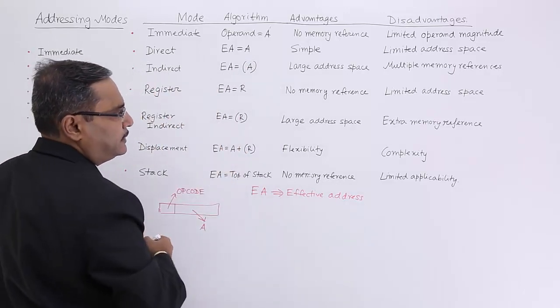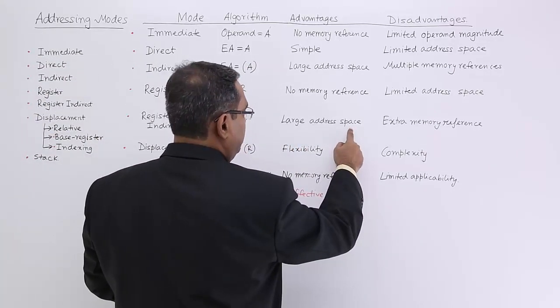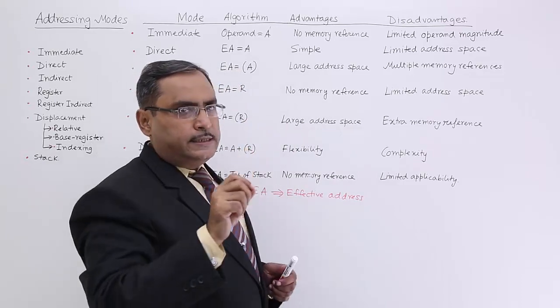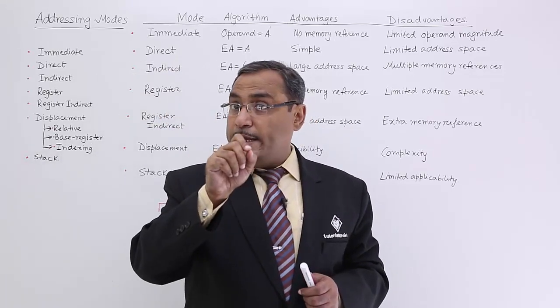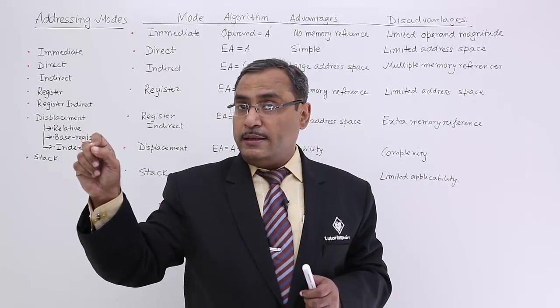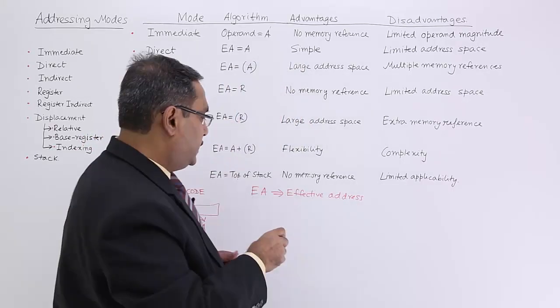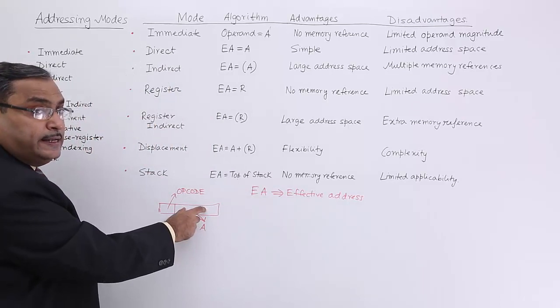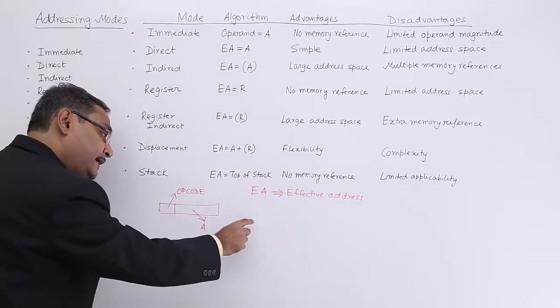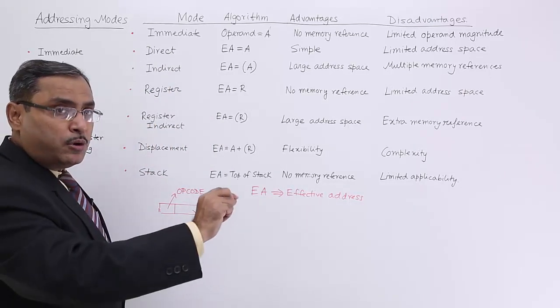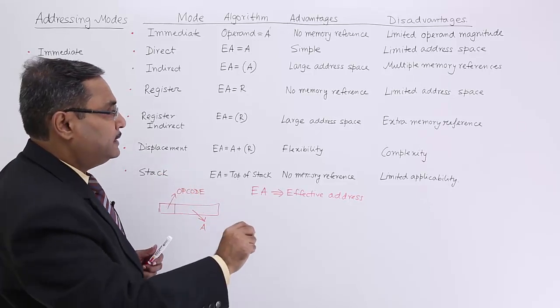That is the effective address. Large address space because the register itself is having huge number of bits, but the register number is limited. Here, number of bits to denote the register is limited, but the register itself is having huge number of bits to denote the memory address.